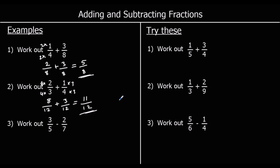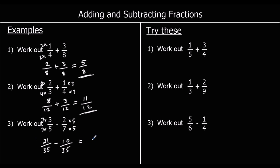Question three: we've got three-fifths take away two-sevenths, but we're going to follow the same steps — make the denominators the same. Thirty-five is five times seven, so if we multiply top and bottom of three-fifths by seven and top and bottom of two-sevenths by five, we get twenty-one thirty-fifths minus ten thirty-fifths. Twenty-one take away ten is eleven, so the answer is eleven thirty-fifths.